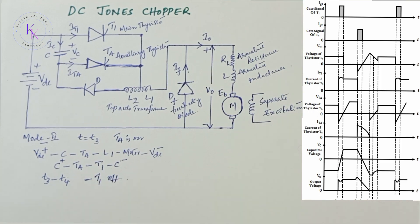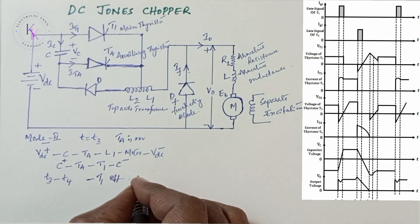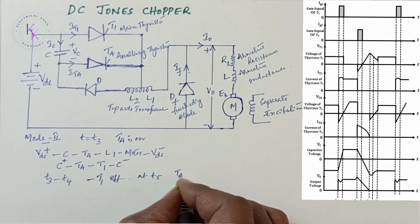Again the capacitor charges in reverse as T1 is turned off, which creates a reverse voltage across the auxiliary thyristor TA at time T5, after the turn off of main thyristor T1, and turns off the auxiliary thyristor TA.